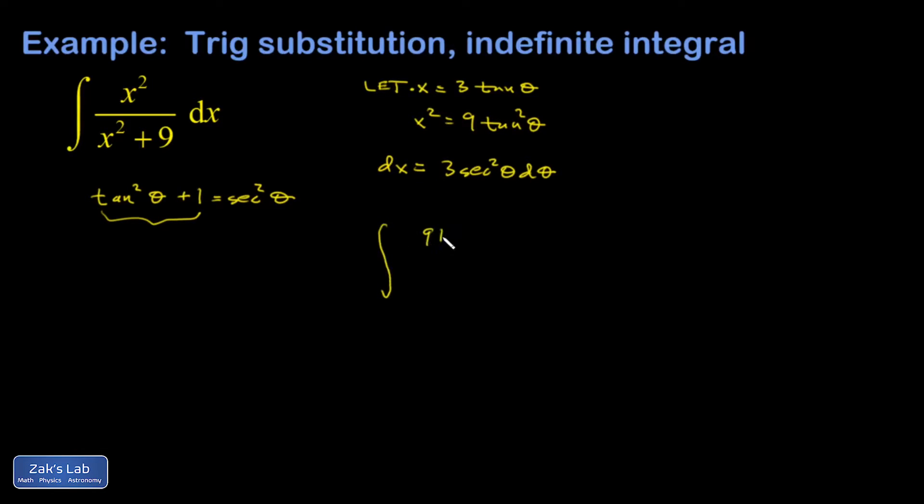I have an x squared in the numerator. Then in my denominator I have an x squared, 9 tangent squared plus 9. And then my dx is 3 secant squared theta d theta.